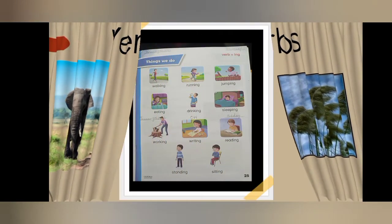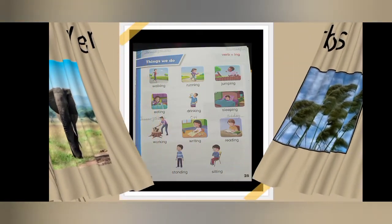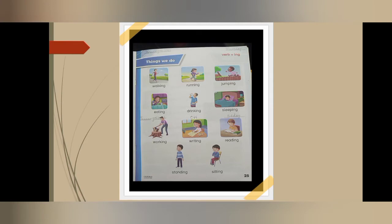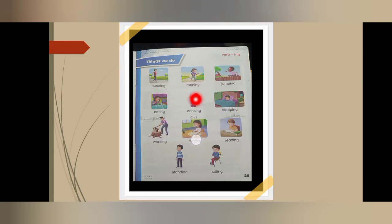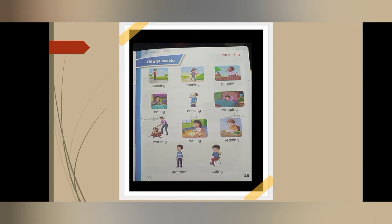Now let's have a look at which page we completed last week. We completed page number 25, and in this page we did verb plus -ing. It means that we learned that when we add -ing to a verb, we make a continuous verb — like run becomes running, walk becomes walking. Today we will use these continuous verbs in sentences.